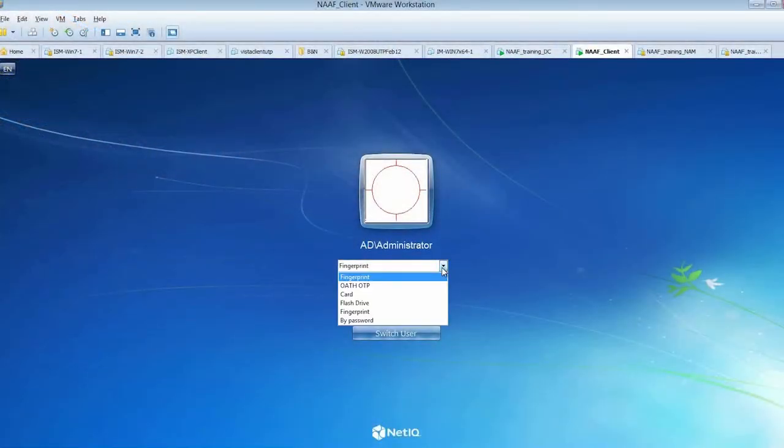Since I have multiple methods enrolled here, you can see there's a bunch of options for me. Generally speaking, a client would only have one, maybe two of these options enabled. Since I do a lot of demos, you see I have a lot of options here. Let's pick a flash drive.